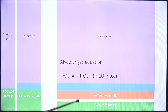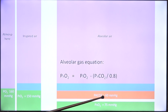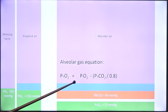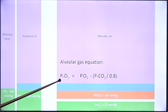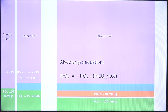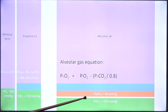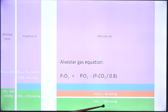As a numerical example: if alveolar carbon dioxide were 60 mmHg, the calculation gives alveolar oxygen as 75 mmHg. In the normal case, alveolar carbon dioxide is 40 mmHg and therefore alveolar oxygen is 100 mmHg.